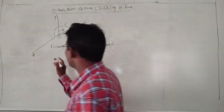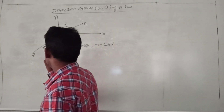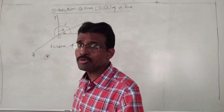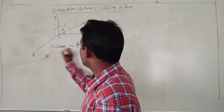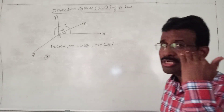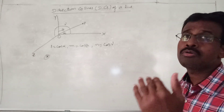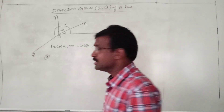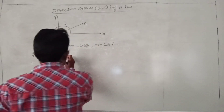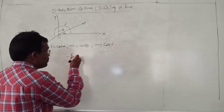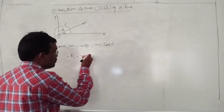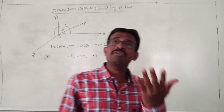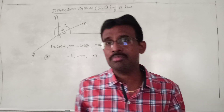Remember one important condition here: if L, M, N are direction cosines of a line, then minus L, minus M, minus N are also direction cosines of that same line.